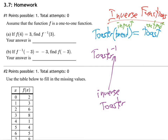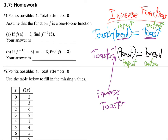With a normal toaster, you put in bread and you get out toast. So an inverse toaster — a switched toaster — what would you put in? You put in the toast and it would turn it back into bread. That's what we mean by inverse: switching inputs and outputs.